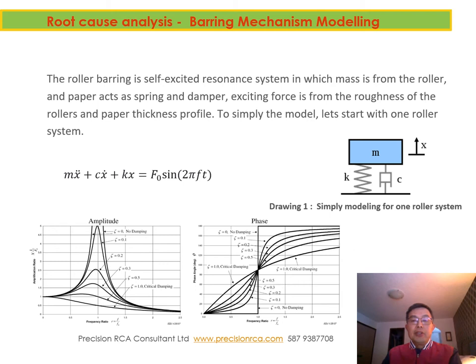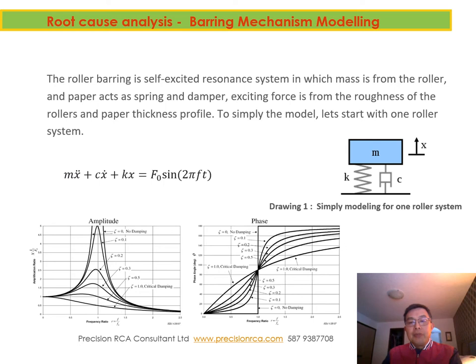Let's do a quick root cause analysis. We built a barring mechanical model here using the basic vibration model — the roll as the mass, paper used as the spring, and also as damping. From this modeling we can find the equation for the total force, and from these equations we can get the performance curve. From this conformance curve we can find how to avoid the barring problem. Barring is actually just a resonance of the system at the natural frequency.